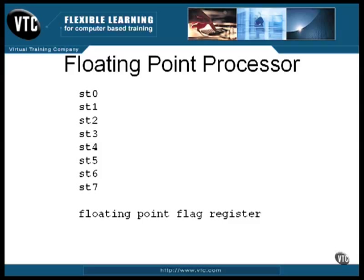The floating point processor has its own flag register, or condition codes and status codes. These are completely separate from the flags you've seen so far. You can't even branch according to these flags, but you can copy the flags, so there are some things that you can do, and I'll be showing you how that works.